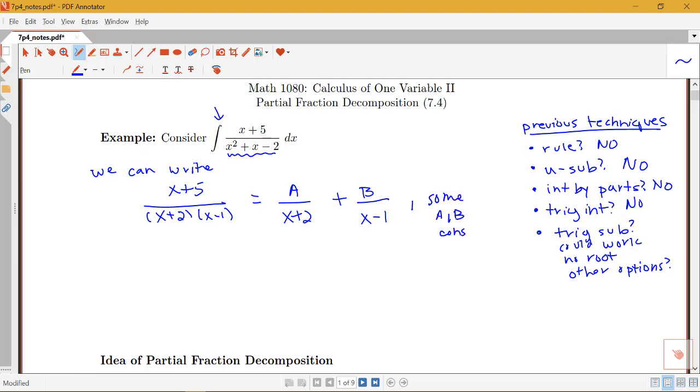So this is the idea of partial fraction decomposition that I can take a given rational function and write it as a sum of some simpler pieces. So I could take my integral here and integrate this number a over x plus 2 plus some number b over x minus 1. And integrating each of these parts is much easier.